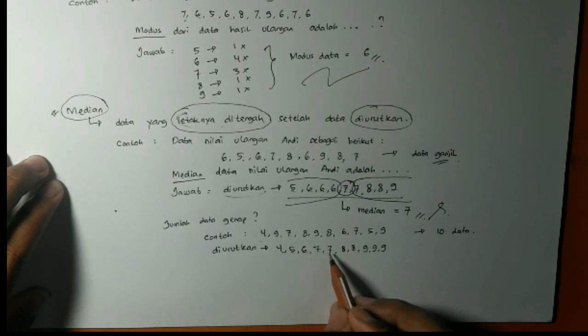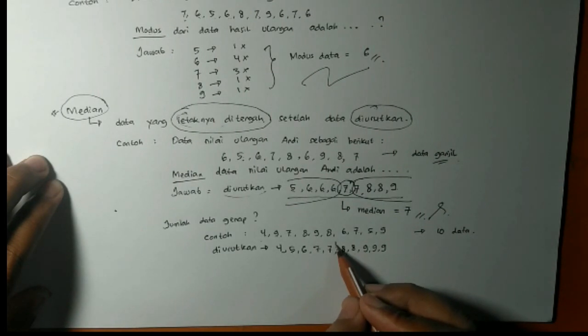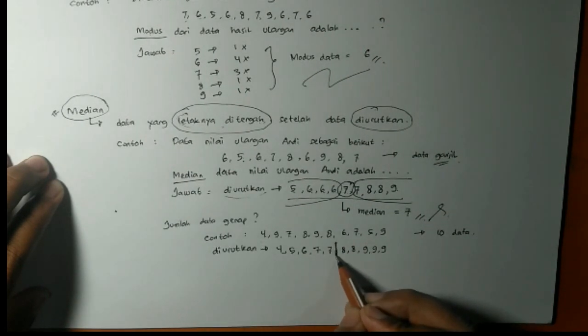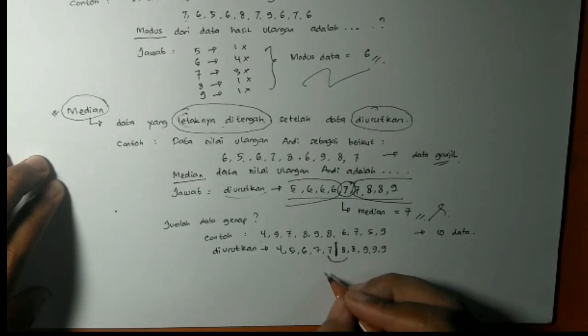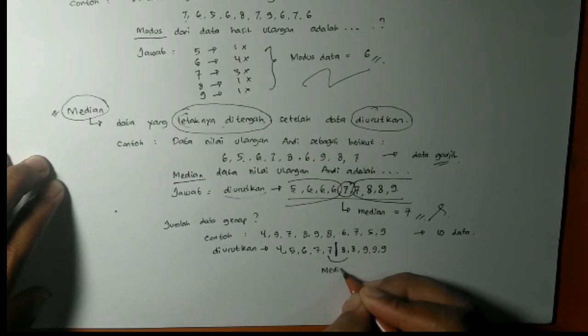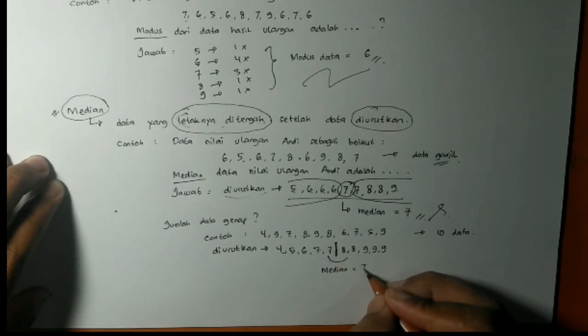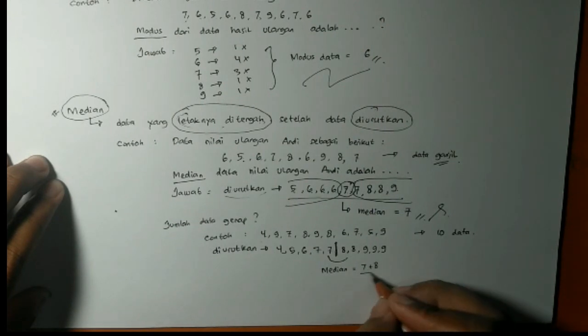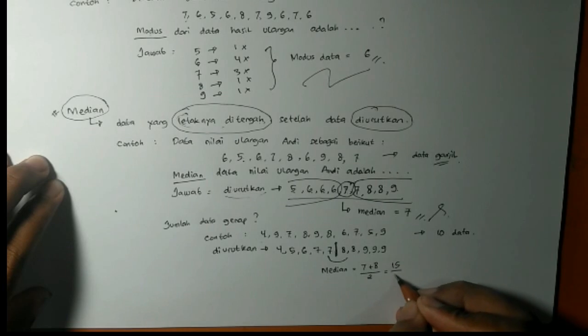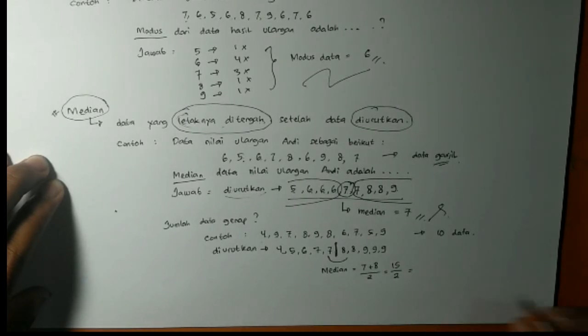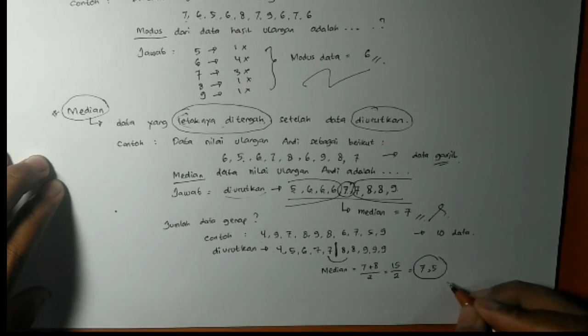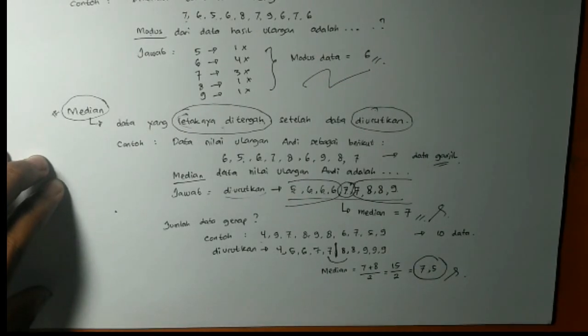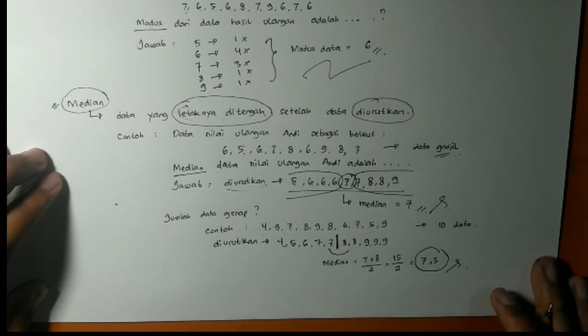Tengah-tengahnya adalah data kelima dan 6 ini. Nah, ini tengah-tengahnya. Sebelah 5 bilangan. Sebelah 5 bilangan juga. Jadi medianya antara 7 dan 8. Dijumlahkan 7 dan 8. 7, 8, 7 tambah 8 itu 15 ya. Dibagi 2. Pakai pembagian bersusun. 7,5 hasilnya. Ini medianya adalah 7,5. Begitu kalau data genap.